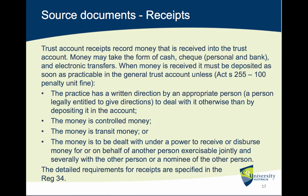Another source document is a receipt. Trust account receipts record money received into the trust account. Money may take the form of cash, cheques — personal or bank — and electronic transfers. When money is received it must be deposited as soon as practicable in the general trust account under section 255, unless the practice has a written direction from an appropriate person to deal with it otherwise, the money is controlled money, the money is transit money, or the money is to be dealt with under a power to receive or disperse money on behalf of another person.